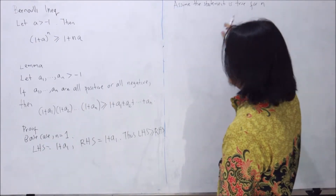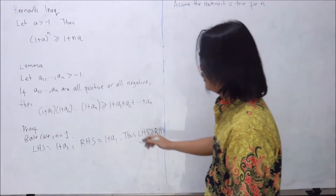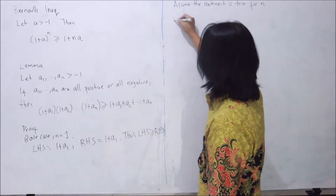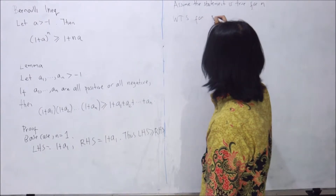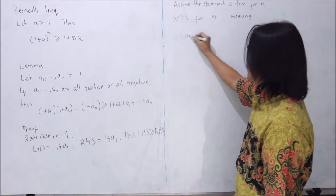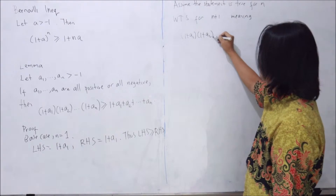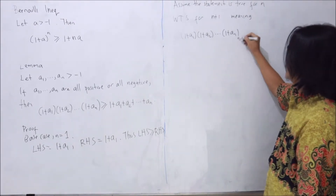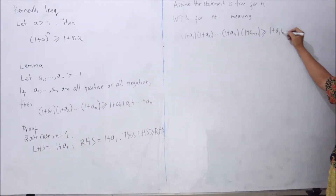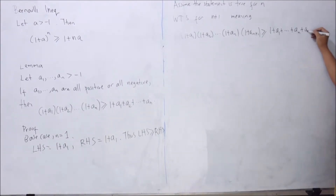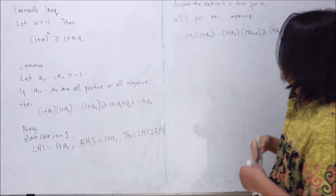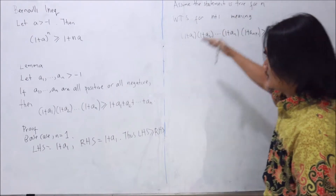Assume the statement is true for n, meaning we have the product inequality holding up to n terms. We want to show it for n+1 — that is, (1+a1)(1+a2)···(1+an)(1+a_{n+1}) ≥ 1 + a1 + a2 + ··· + an + a_{n+1}.